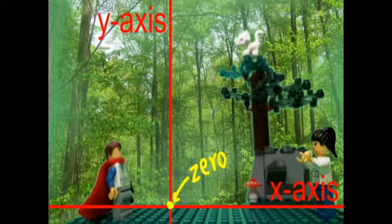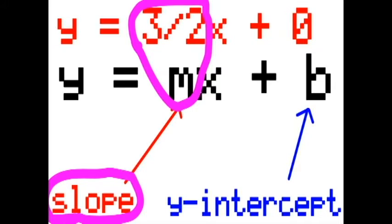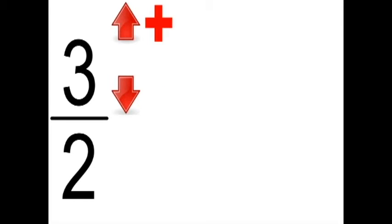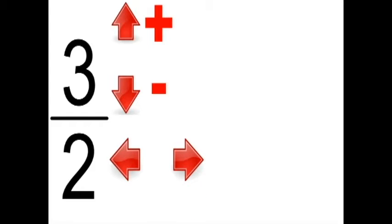Then he places his first step. Hopefully you remember from the slope section that the top number, or numerator, of the slope represents how far you need to go up or down. Positive numbers go up. Negative numbers go down. The bottom number, or denominator, of the slope represents how far you need to go across. Positive numbers go right. Negative numbers go left.